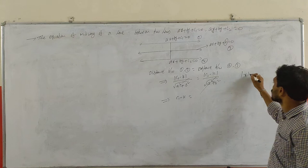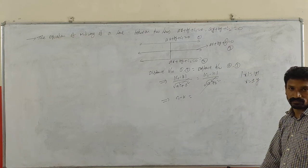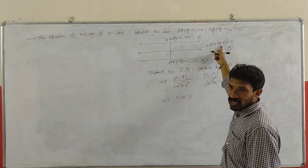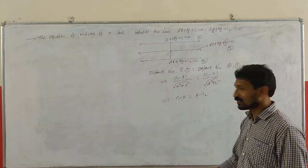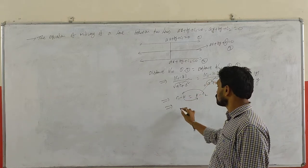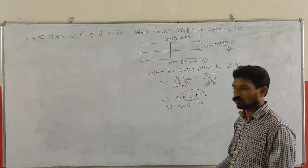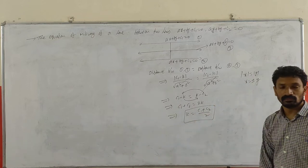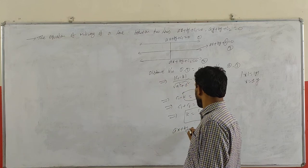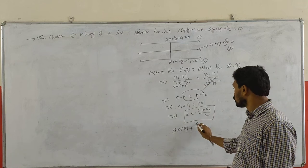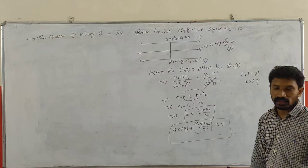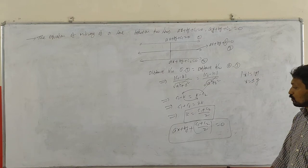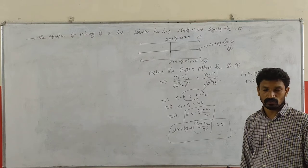Whenever |x| = |y|, then x = ±y. Using the appropriate case: C1+C2 = 2k, so k = (C1+C2)/2. The required equation of the midway line is Ax + By + (C1+C2)/2 = 0. This is a very important formula: the equation of the middle line between Ax+By+C1=0 and Ax+By+C2=0 is Ax+By+(C1+C2)/2=0.